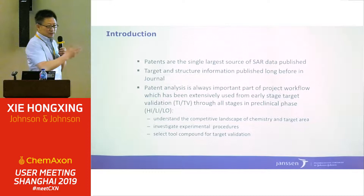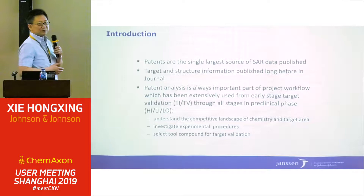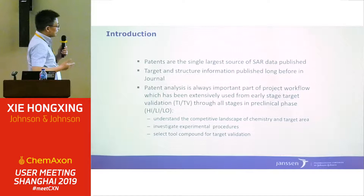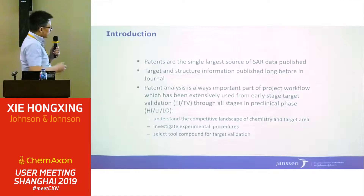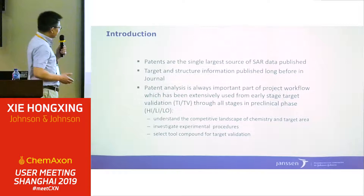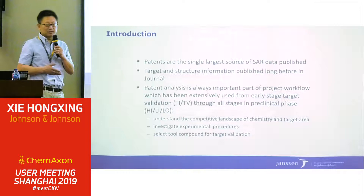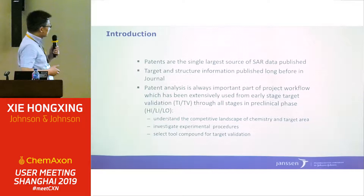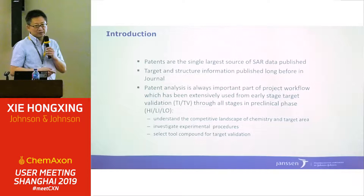If you ask medicinal chemists starting early discovery projects, they're always looking at patents for information. Patent information is used from the early stage of target validation through almost all three stages of the clinical phase. Three interesting points, for instance: understanding the competitive landscape of chemistry in the target area; investigating experimental procedures — sometimes you have a compound and don't know how to make it, so you look into the patent to see how a competitor made it; and also selecting compounds for target validation.